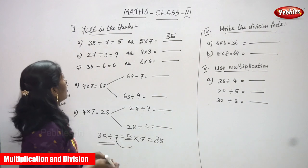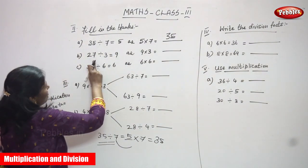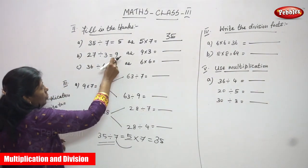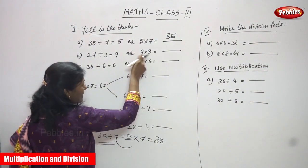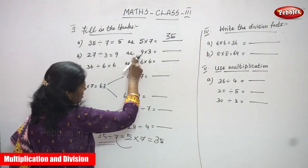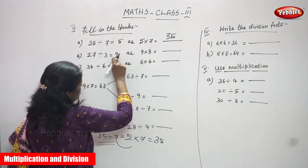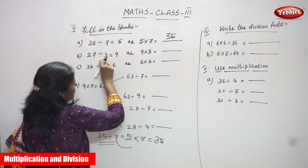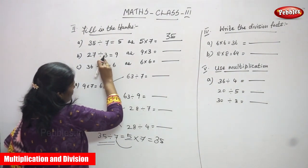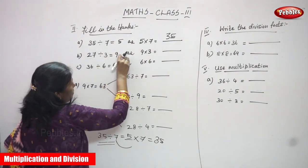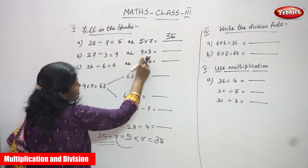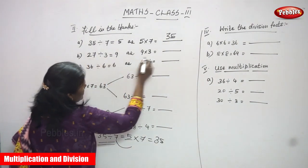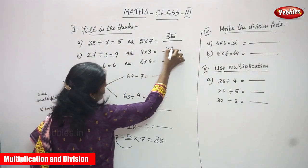So 27 is divided by 3, you can get 9. Both sides are equal. 9 is the quotient, and this 3 is in the division side. It goes to the opposite direction and becomes multiplication. So 9 into 3 — the product is 27.